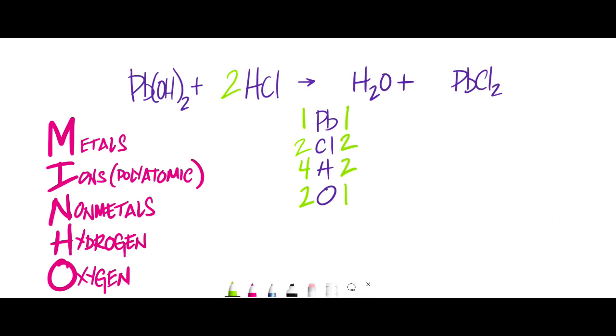So now the next thing to be balanced would be hydrogen. And in order to have four hydrogens on the product, or right side of the arrow, we're going to need a coefficient of two here. And that of course, when multiplied by the subscript, gives us a total of four, which we wanted. But also, as a result, it ups the amount of oxygen.